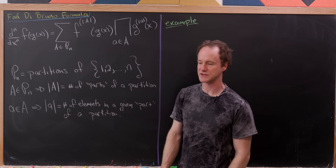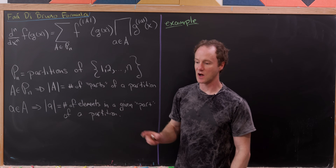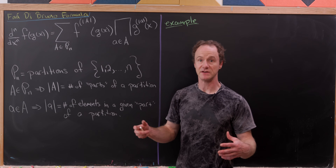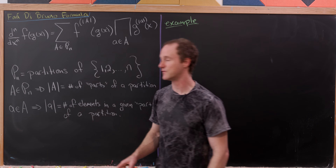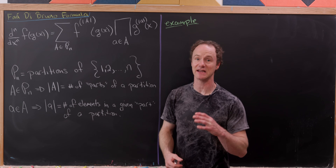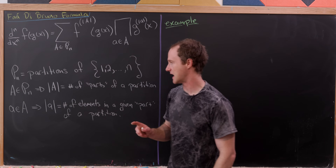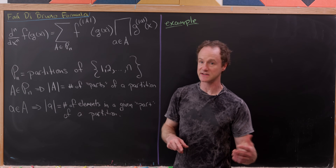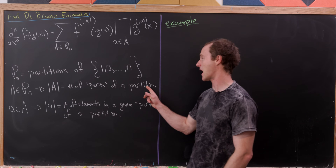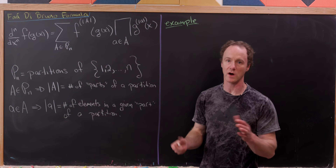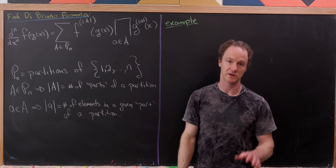Notice that if we've got a partition, it will be a set of subsets — specifically disjoint subsets that union to the whole set. So if we take A inside of P(n), that capital A is itself a partition of {1,...,n}. The cardinality |A| is the number of elements in A, but the elements of A are subsets of {1,...,n}, so |A| is the number of parts of the partition A.